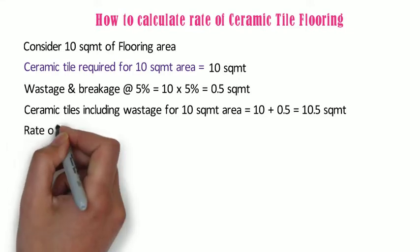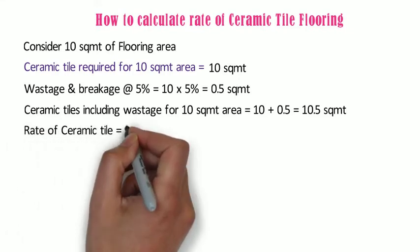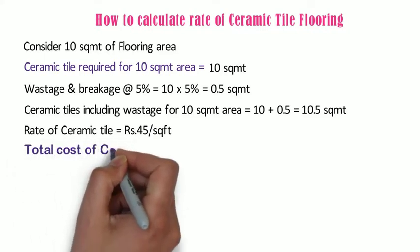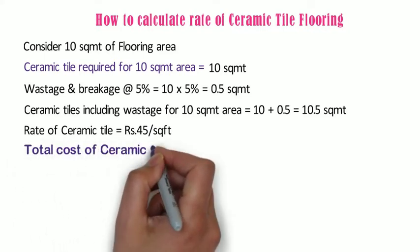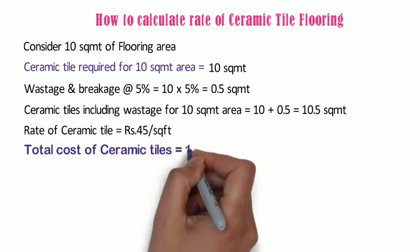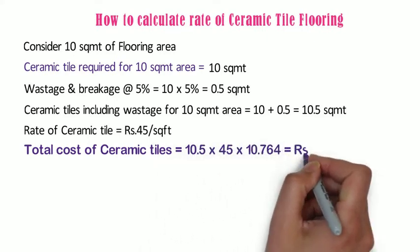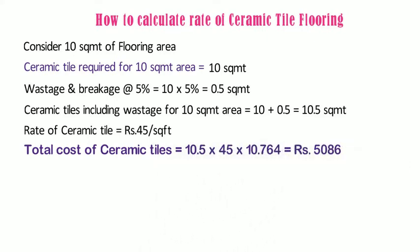Consider the rate of ceramic tile as 45 rupees per square feet. So the total cost of ceramic tile shall be 10.5 x 45 x 10.764 = 5,086 rupees.